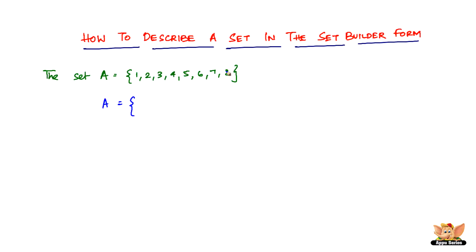All these elements belong to natural numbers, since the set starts from 1. If it had started from 0 it would have been whole numbers, but since it starts from 1 and goes up to 8, it belongs to natural numbers. So we write: let X belong to natural numbers. This is how you start writing a set builder form. Then we add 'such that', which is represented by a colon — C-O-L-O-N — meaning X belongs to natural numbers such that some condition holds.